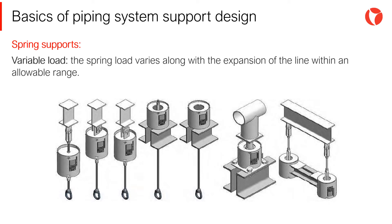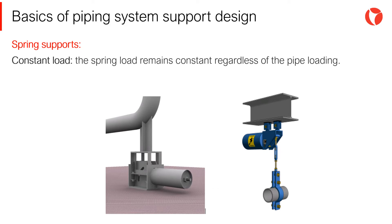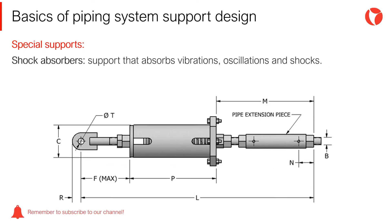Spring supports — variable load: within spring supports, variable load supports are the most used. The spring load varies along with the line expansion within an allowable range. In constant load spring supports, the load remains constant regardless of the loads in the pipe, due to a system of internal levers. Finally, within the special supports, we find shock absorbers — also known as hydraulic shock or sway suppressors — whose application is limited to the absorption of rapid movements such as vibrations, oscillations, and shock loads.